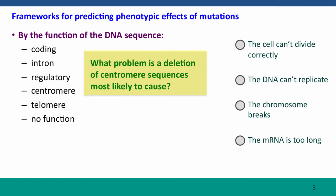In this first slide, the framework is the function of the DNA sequence. Within that, the issues are whether or not it's coding, is it an intron, is it regulatory, is it a centromere or a telomere sequence, or is it a sequence that has no function at all. Thinking about these issues is one way to think about the consequences of a mutation, and then there's a question here that calls on thinking about these issues to answer it.